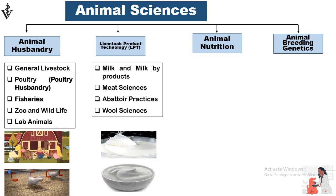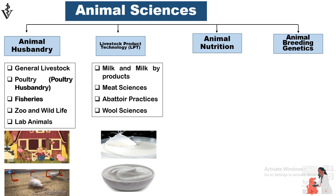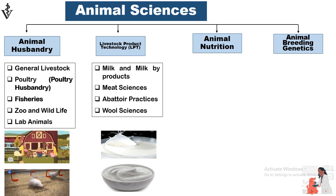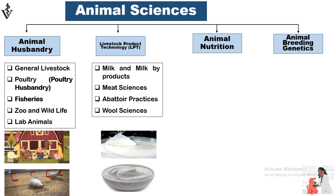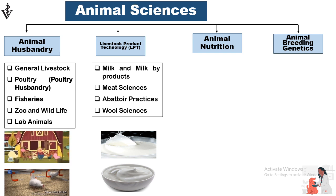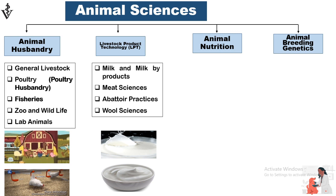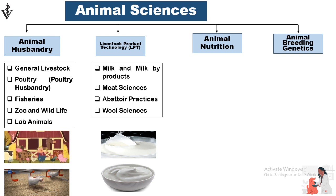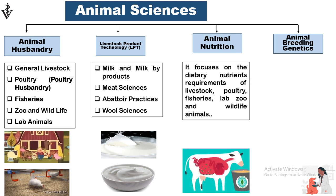The second branch is livestock product technology. It is a science which purely focuses on livestock products and their byproducts, such as milk and milk byproducts, meat sciences, abattoir practices, and wool sciences.